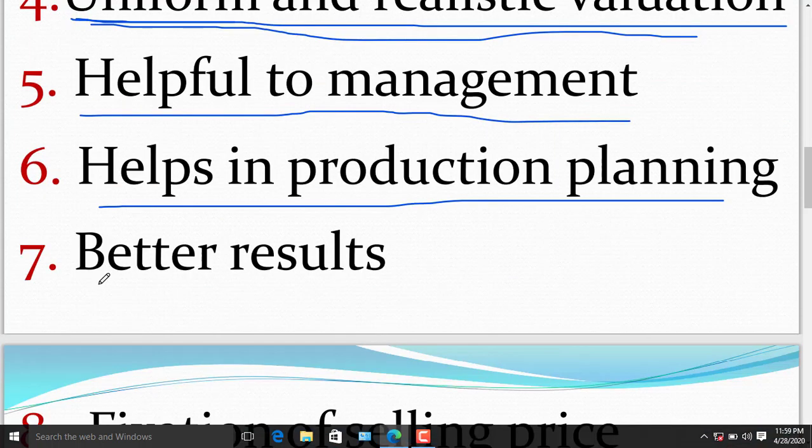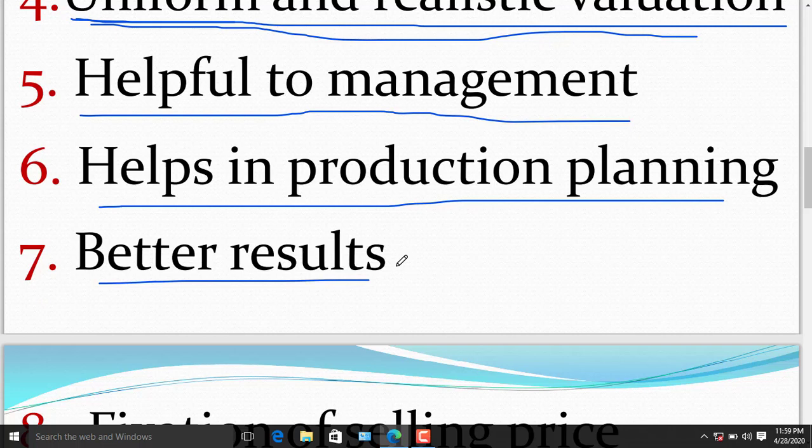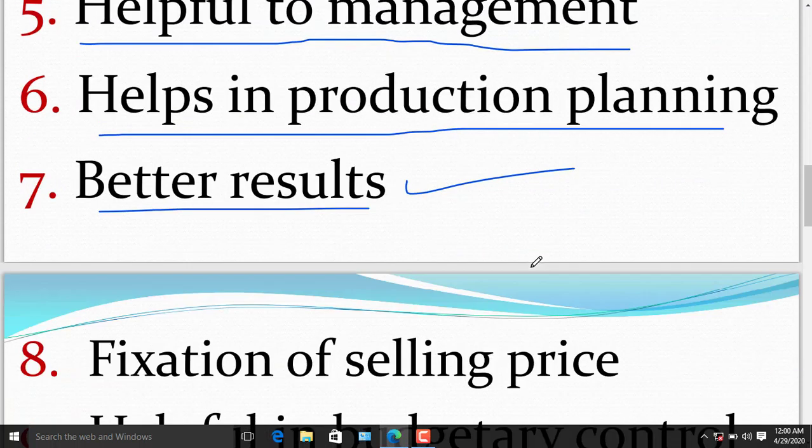The seventh benefit of marginal costing is better results. By using break-even point, margin of safety, and contribution—as you know that contribution includes profit margin as well as the fixed cost—we can separate the fixed cost and the variable cost from total sales. Using the technique of marginal costing, we get better results.